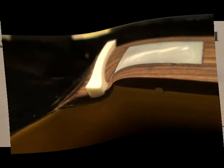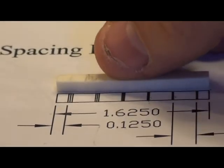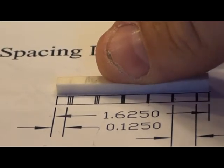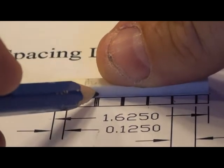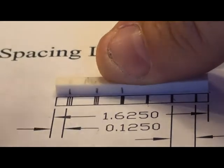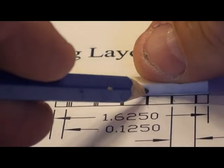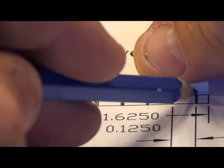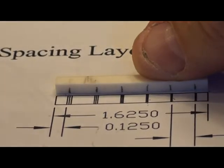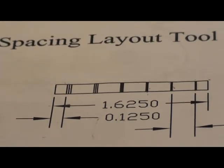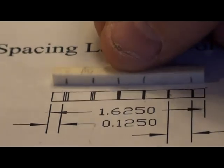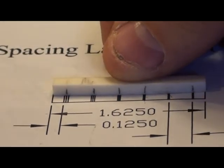I've got my trusty little nut spacing drawing here that I use to mark up my bone nut. With my pencil I'll just go along and mark my centers like so. It looks like my B string is just slightly off so I'll need to remark that one.